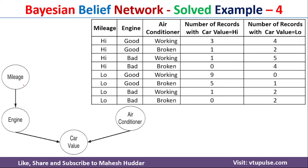In this case, we have been given four nodes. The first one is mileage, the second one is engine, the third one is car value, and the fourth one is air conditioner. These are the values for each of these particular nodes.